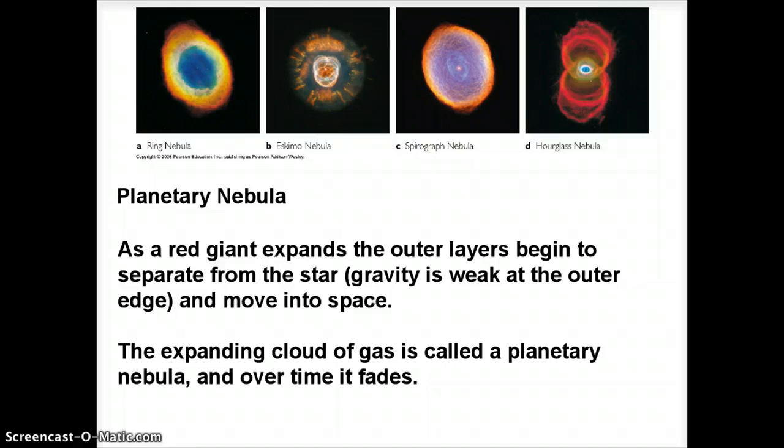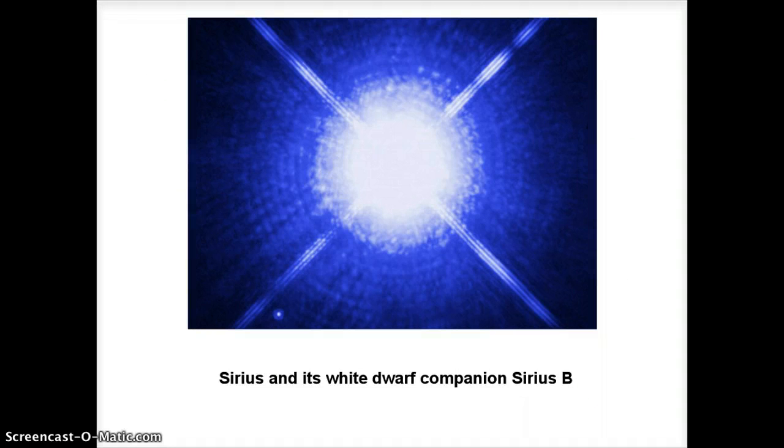The planetary nebula is what becomes of the outer layers. The core is a little bit more interesting. The core is going to become a white dwarf, and you remember white dwarfs from the HR diagram. They're that diagonal line down in the lower left where we have very hot but very faint things.